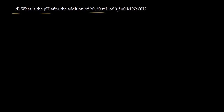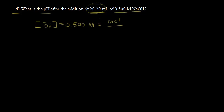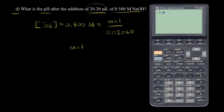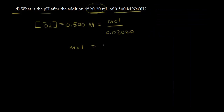Now for part D: find the pH after the addition of 20.20 mL of 0.500 molar sodium hydroxide. Just like before, we need to find the moles of hydroxide ions. The concentration of OH⁻ is 0.500 molar. Converting 20.20 mL to liters gives 0.02020 L. Multiplying 0.5 × 0.02020 gives us 0.0101 moles of hydroxide ions.